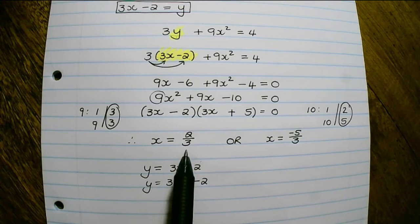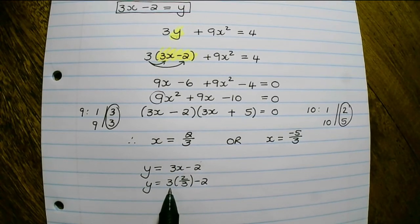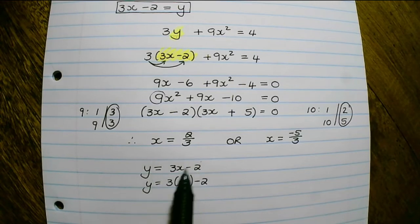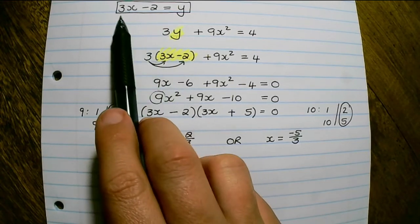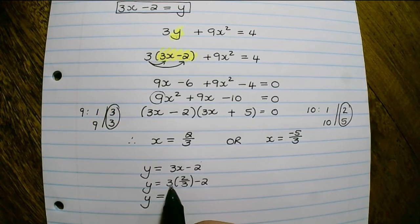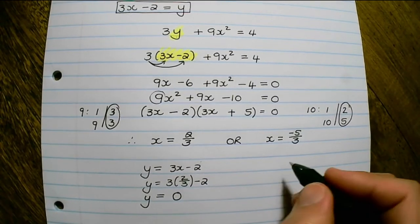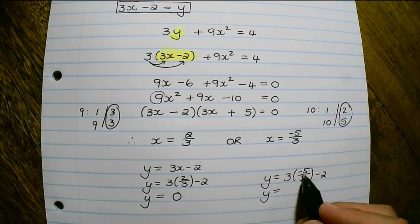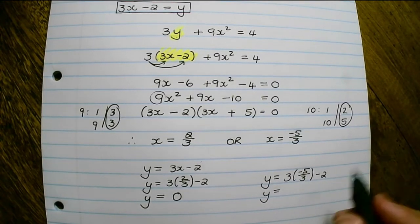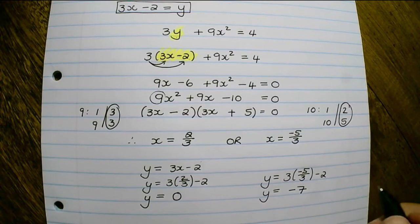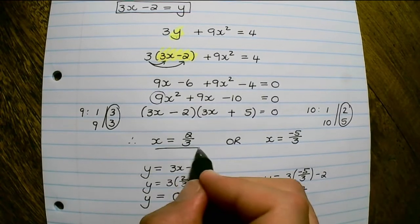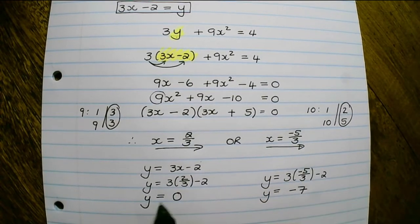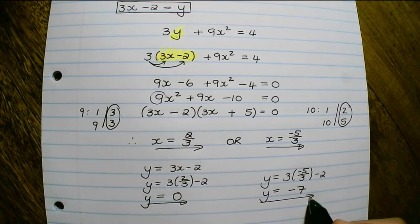To find y, I substitute 2 over 3 into our equation for y. That will be 2 minus 2, so y equals 0. Or y could be negative 5 minus 2, which is negative 7. So I have 2 x values and 2 y values.